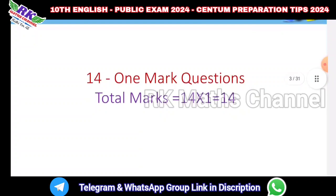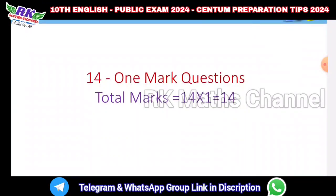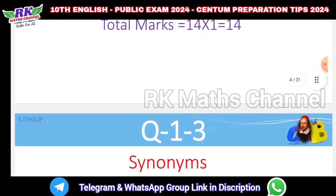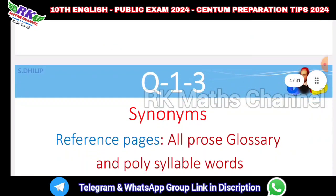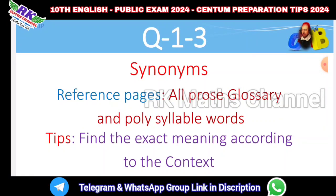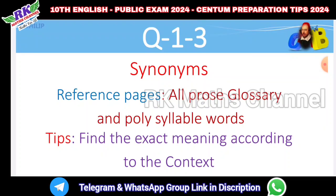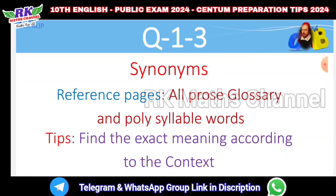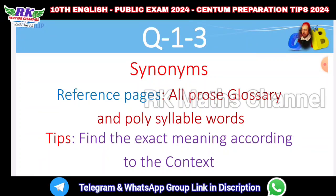Part 1 has 14 questions. Question number 1 covers synonyms. Then you will have prose-based questions. You will also have polysyllable words and glossary. Find the exact meaning according to the context using your textbook.